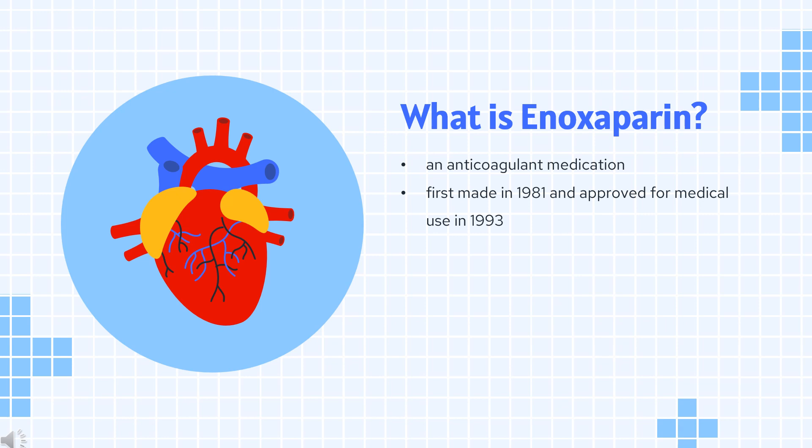It is used to treat and prevent deep vein thrombosis and pulmonary embolism, including during pregnancy and following certain types of surgery. It is also used in those with acute coronary syndrome and heart attacks. Enoxaparin was first made in 1981 and approved for medical use in 1993. It is on the World Health Organization's list of essential medicines.